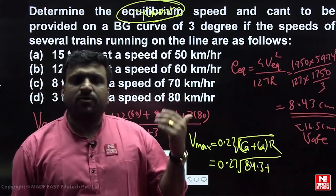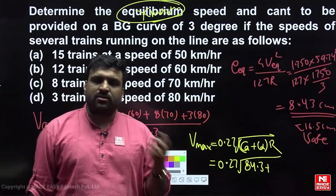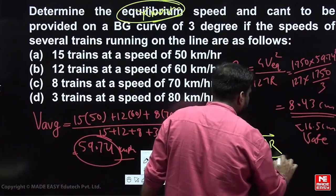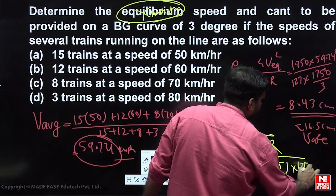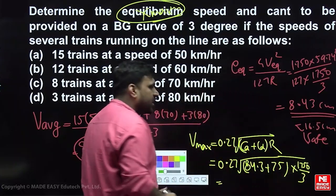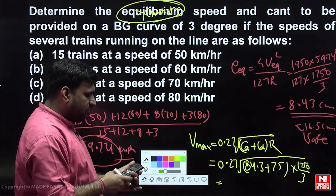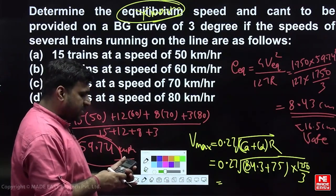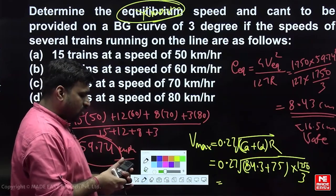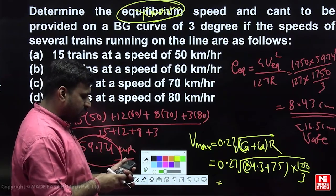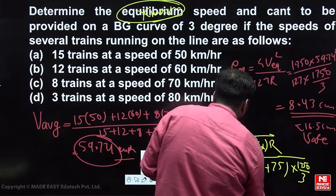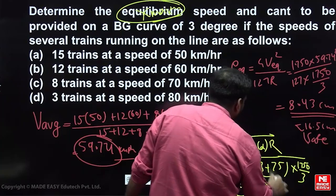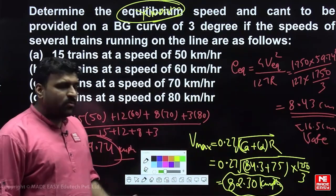The radius R = 1750/3. Substituting: V_max = 0.27 × √((84.3 + 75) × 1750/3), which comes out to be 82.30 kmph.